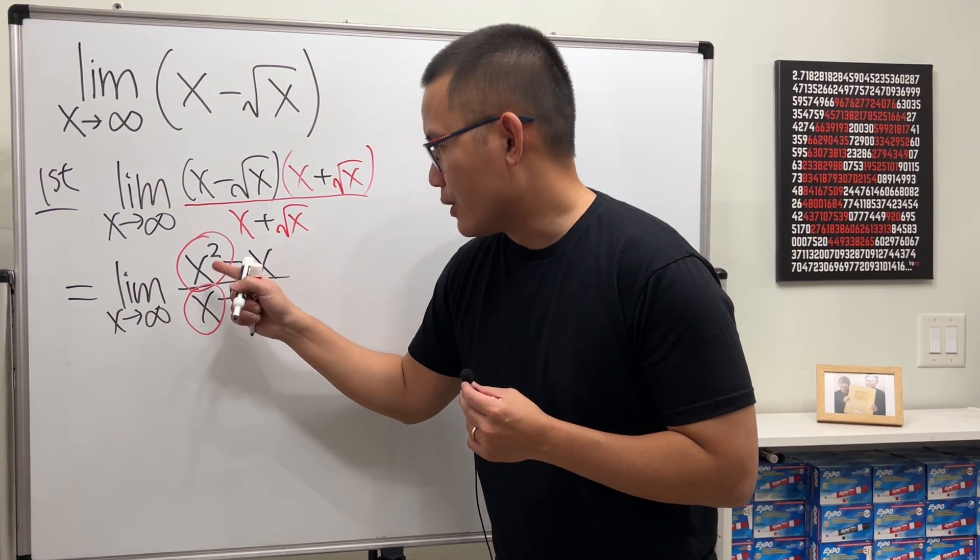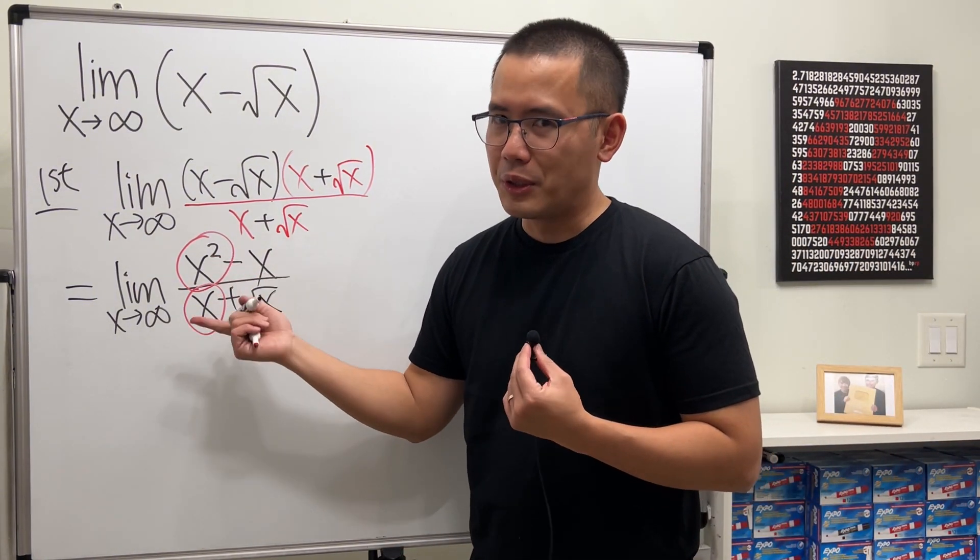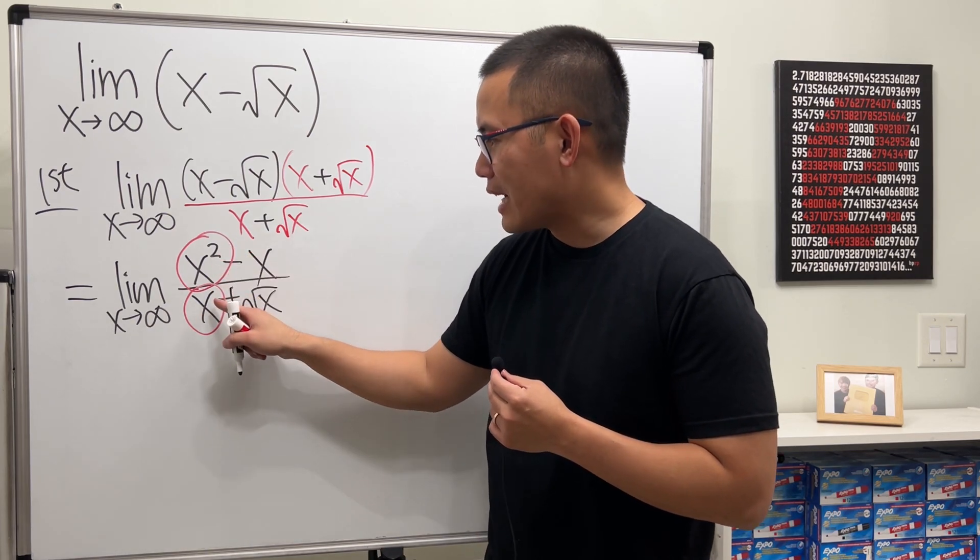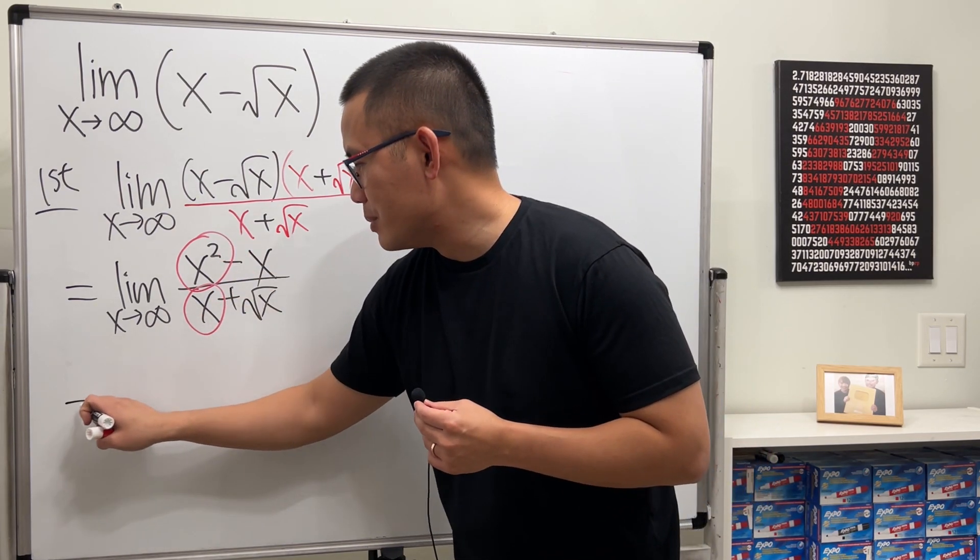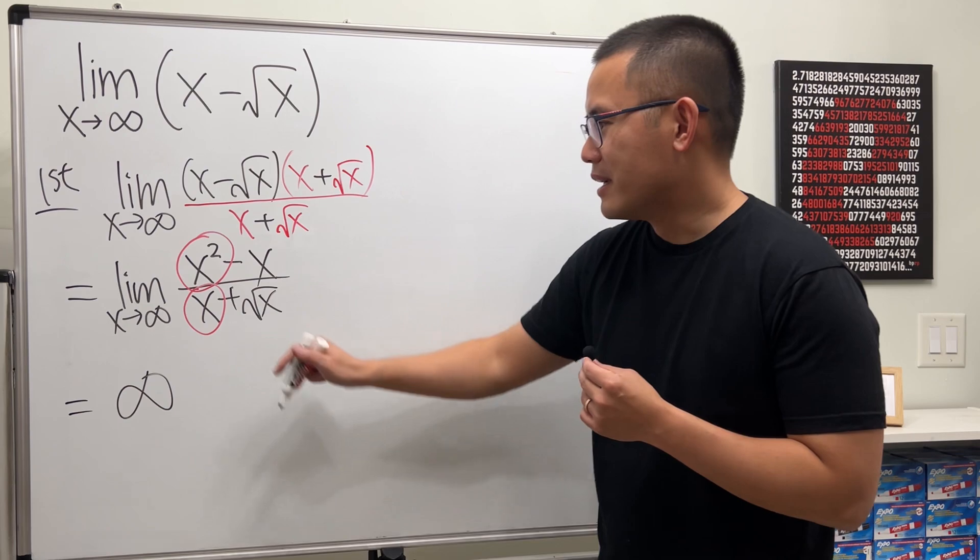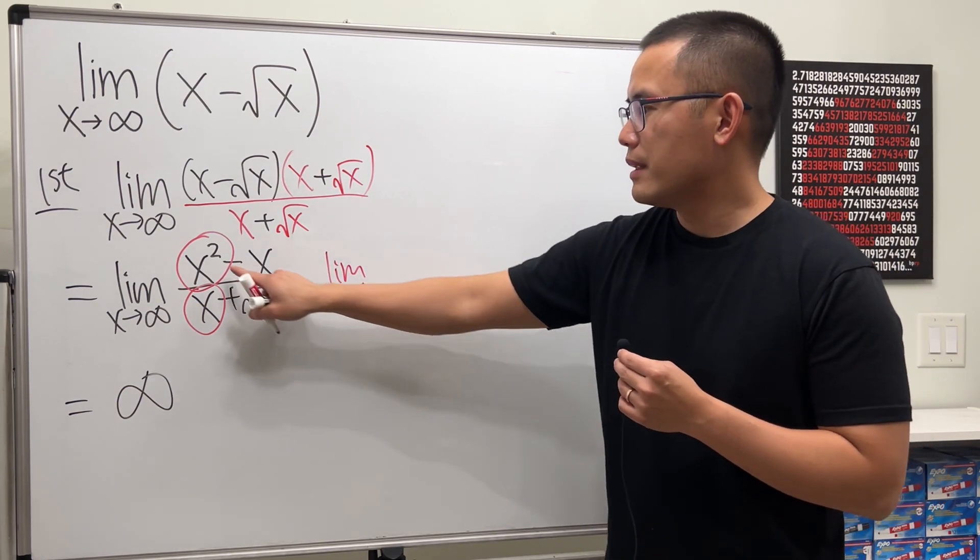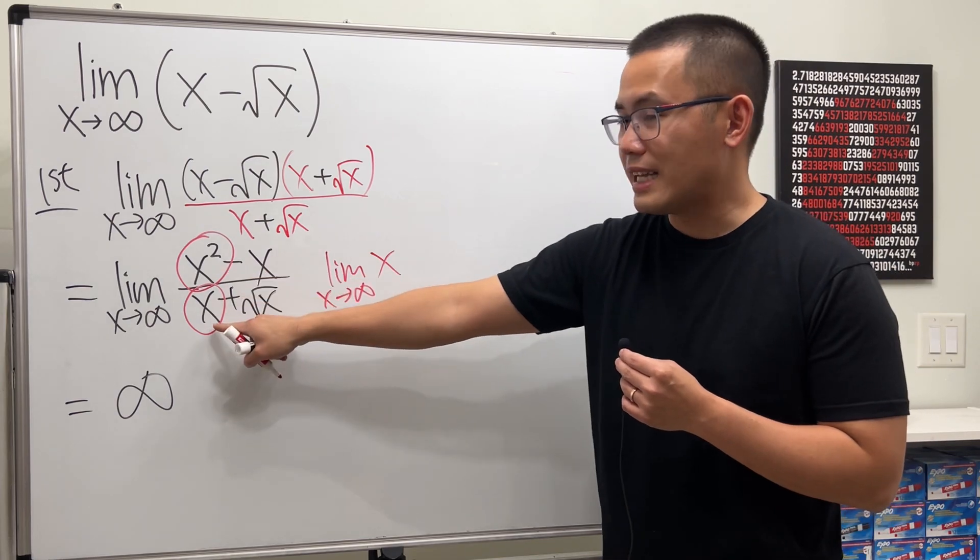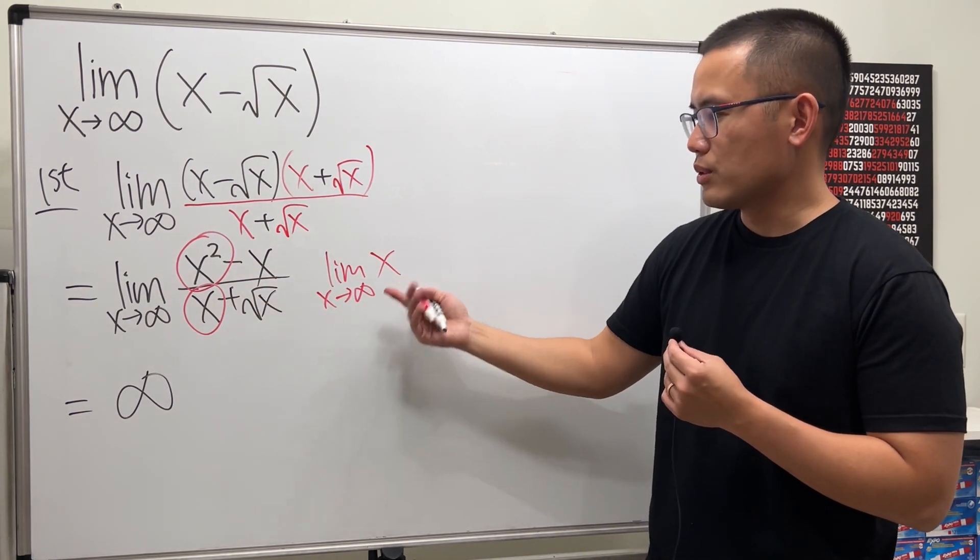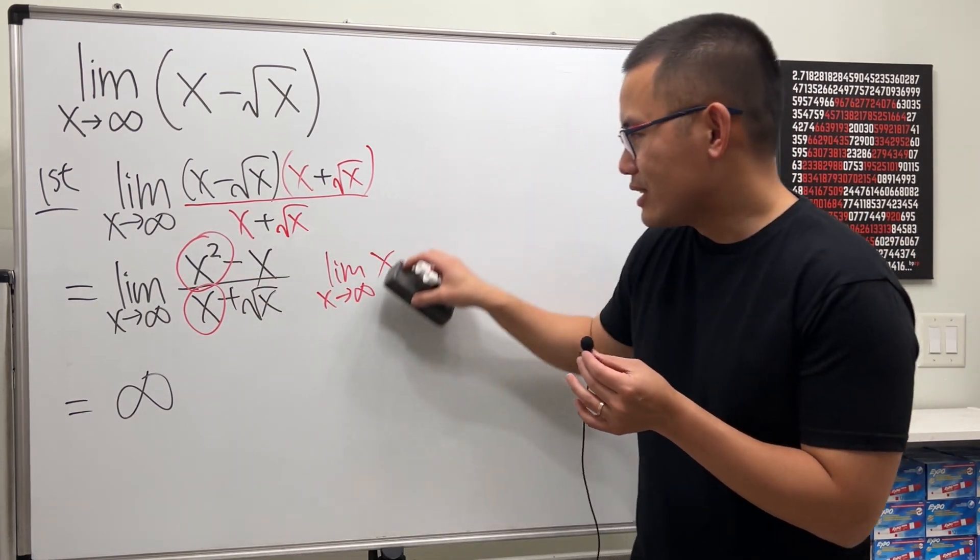So we get, you can pretty much tell the answer already. The top exponent is higher than the bottom, then the answer is going to be infinity. Because this gives you the limit as x approaching infinity of just x after you reduce that, and of course x goes to infinity.